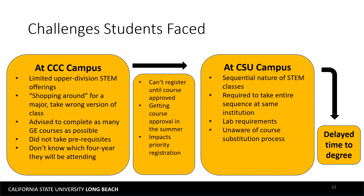In the interim stage, some issues transfer students face include not being able to register until their transfer articulation course is approved. Getting course approval in the summer is also an issue, as many faculty are out of the office and transfer articulation approval requires faculty, department chair, or even dean approval. A big interim issue is that as a result of not getting courses approved, students no longer have priority registration, or they lose their priority registration.